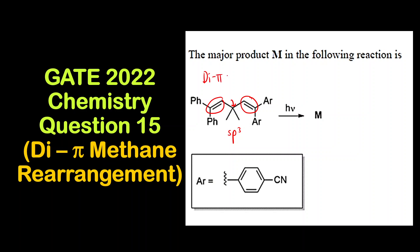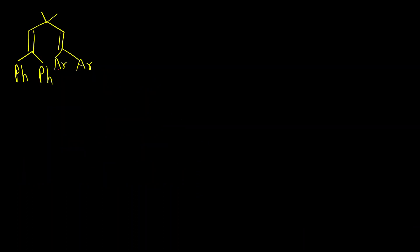That is only one carbon is in between the two double bonds — that is where this is called di-pi methane rearrangement. What is the trick for identifying any photochemical reaction? It occurs in presence of light. Whenever you see hν or light, first check for a pericyclic reaction, and then check if a photochemical reaction is possible.